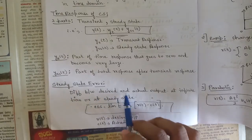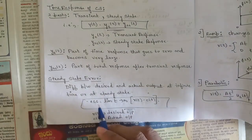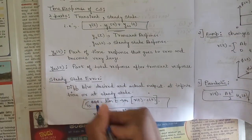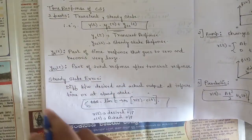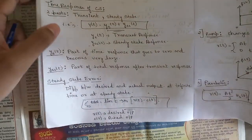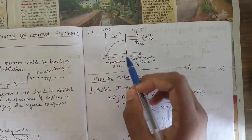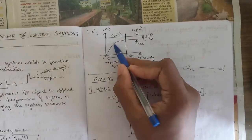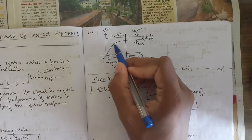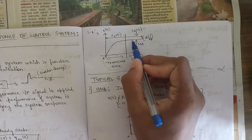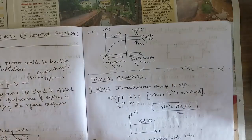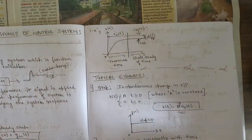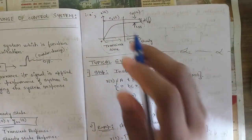The steady state error is the difference between the desired and actual output at infinite time, or at steady state. It is represented as e_ss, and the formula is: e_ss = limit t→∞ [r(t) - c(t)], where r(t) is the desired output and c(t) is the actual output. In a graph, the transient state shows the sudden change in output, and after that the system reaches steady state — that remaining difference is the steady state error.